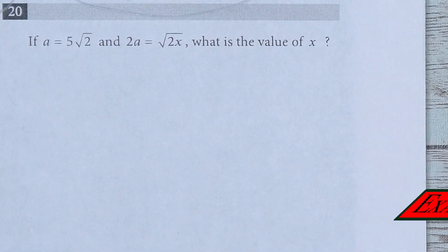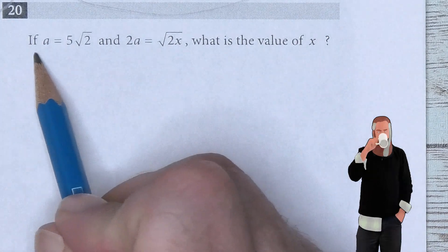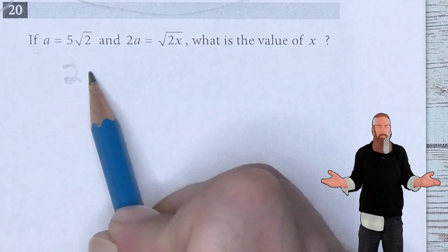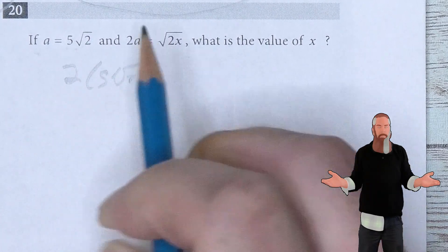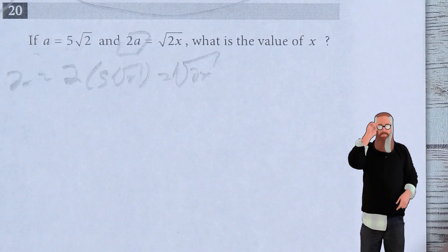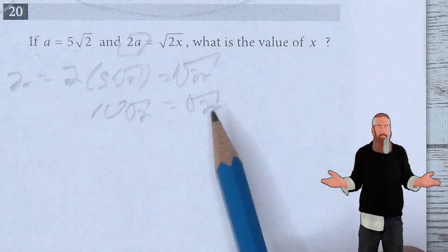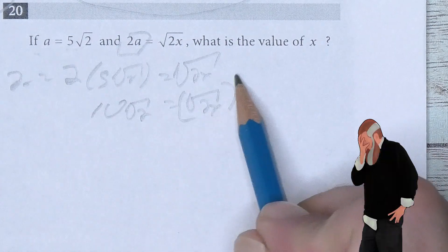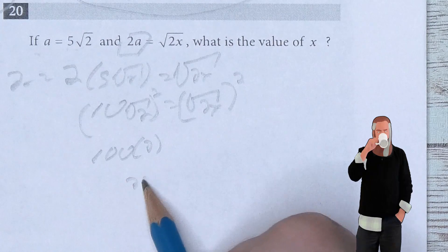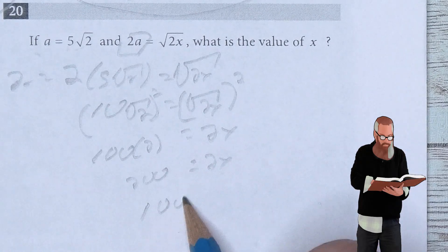If A equals 5 times the square root of 2 and 2A equals the square root of 2x, what is the value of x? Taking 2 times the first equation: 2A equals 2 times 5 times the square root of 2, which is 10 times the square root of 2. Setting equal to the square root of 2x: 10 root 2 equals root 2x. Squaring both sides: 100 times 2 equals 2x, so 200 equals 2x, giving x equals 100.